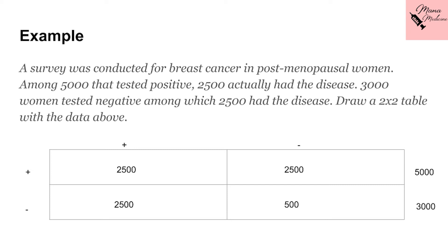Another useful aspect is that we can categorize these boxes according to the data they hold. The 2500 in the first column, first row is true positive, because our test told us that these patients have the disease and they actually had the disease. Moving on, the value in the second row, first column is false negative, because our test told us that these patients do not have the disease, but they actually do have the disease — they are under the first positive column. The reality shows us that they do have the disease, so we put them in false negative. This is the mistake on the part of our diagnostic test.